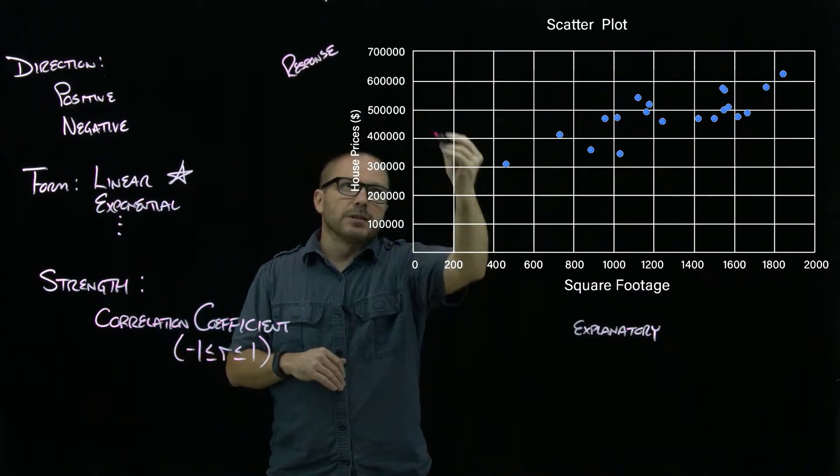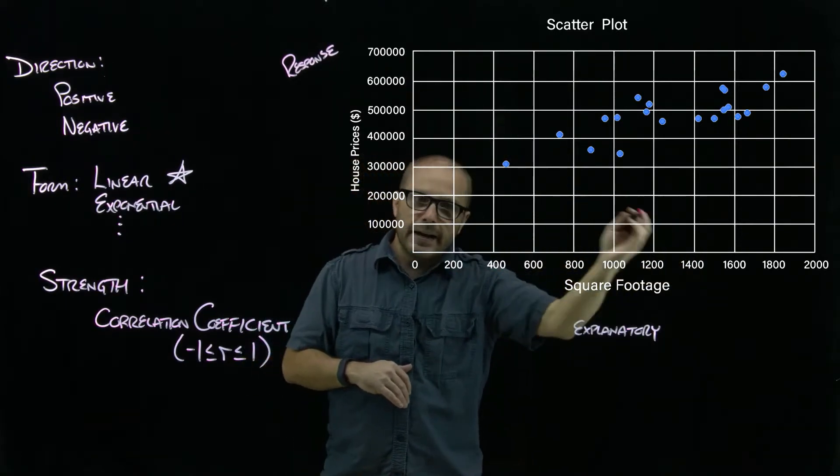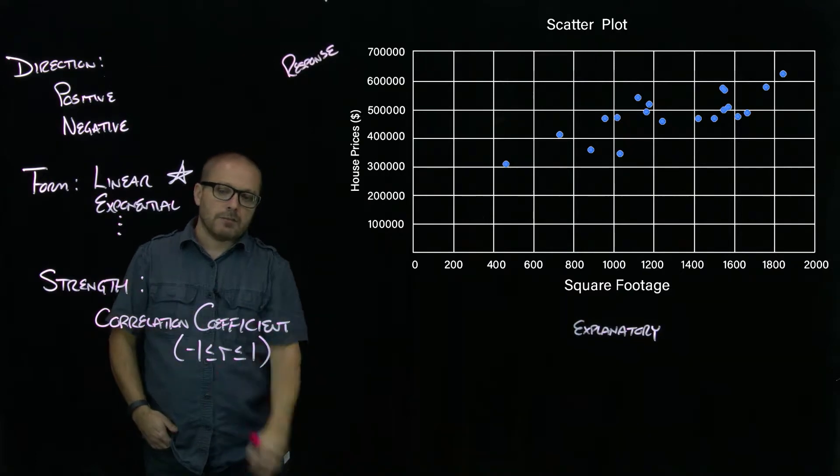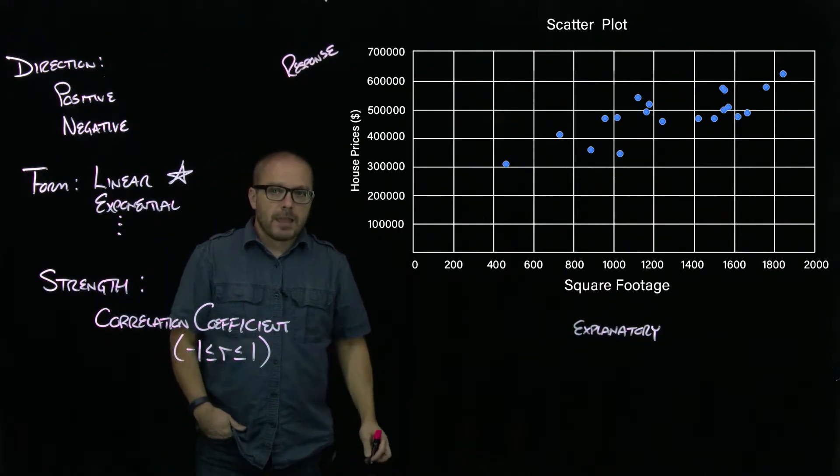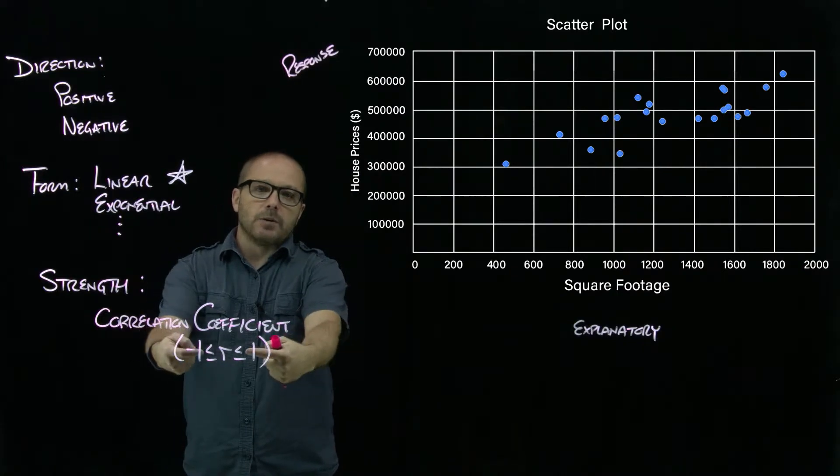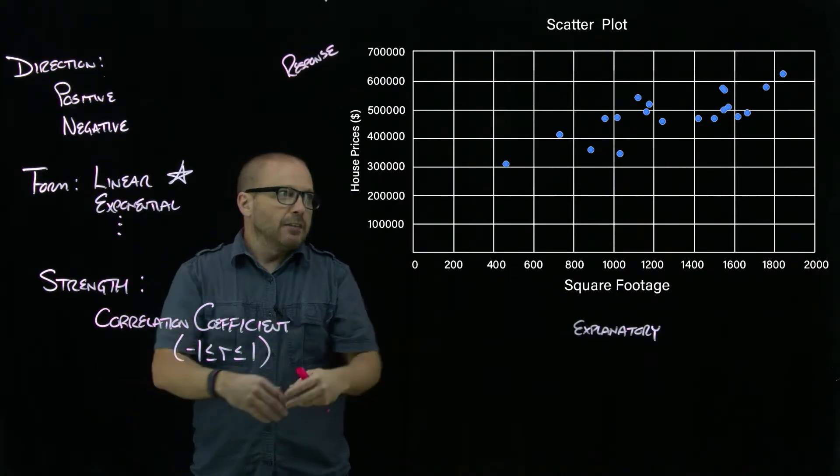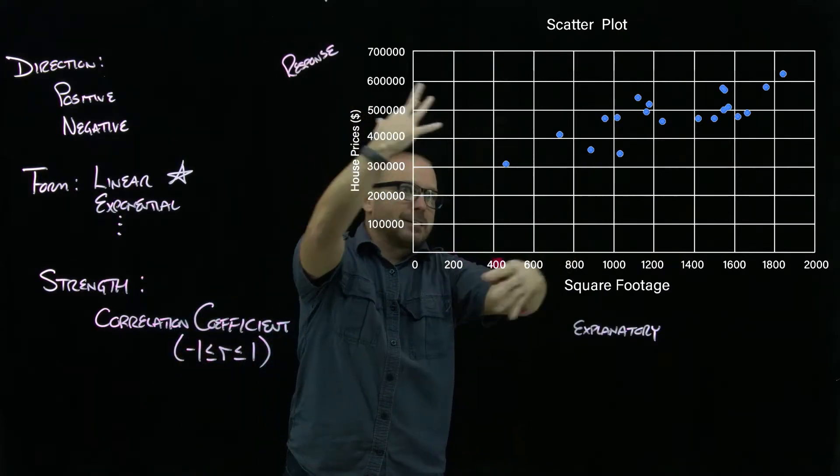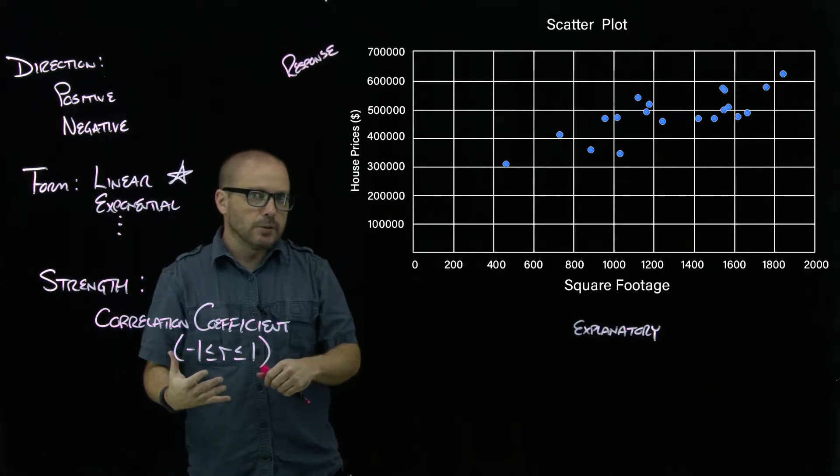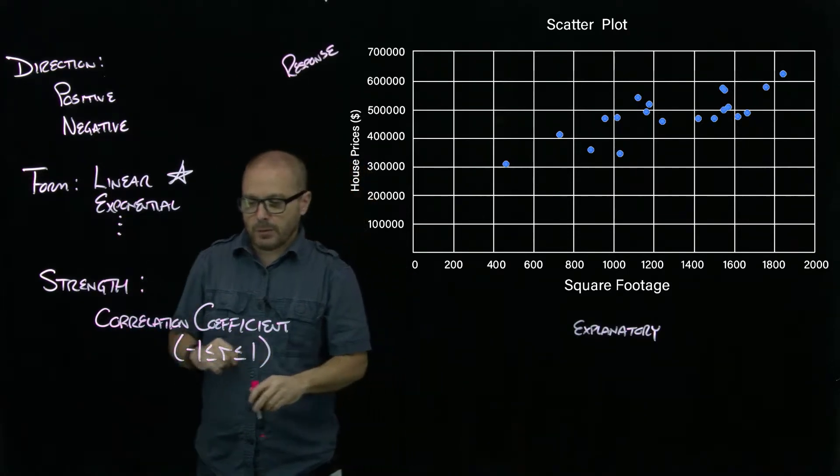If this data was a negative relationship and perfect—so that when I drew a line every dot was right on the line—then we would have an R of negative one. As you deviate from perfectly linear, you move in from negative one or one towards zero, where zero would be if this was just a cloud of dots with no discernible pattern at all. Our R would tend to be close to zero, meaning there's really no linear relationship between the two.